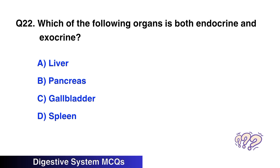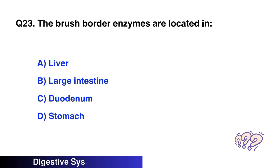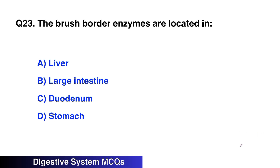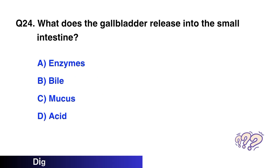Question number twenty-two: Which of the following organs is both endocrine and exocrine? The right option is B, pancreas. Question number twenty-three: The brush border enzymes are located in? The right option is C, duodenum.